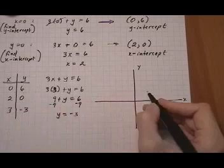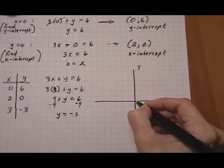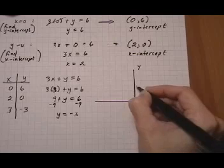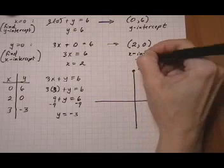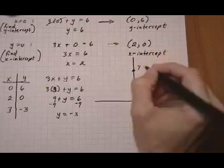So we start with (0, 6). Zero for x and then up 6 for positive: one, two, three, four, five, six. Right there. So I'm going to extend my axis a little bit here.